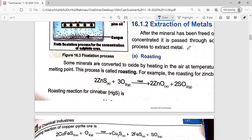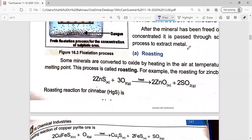We convert some minerals into oxide when we heat it below its melting point, meaning it doesn't melt completely, but it is below its melting temperature.